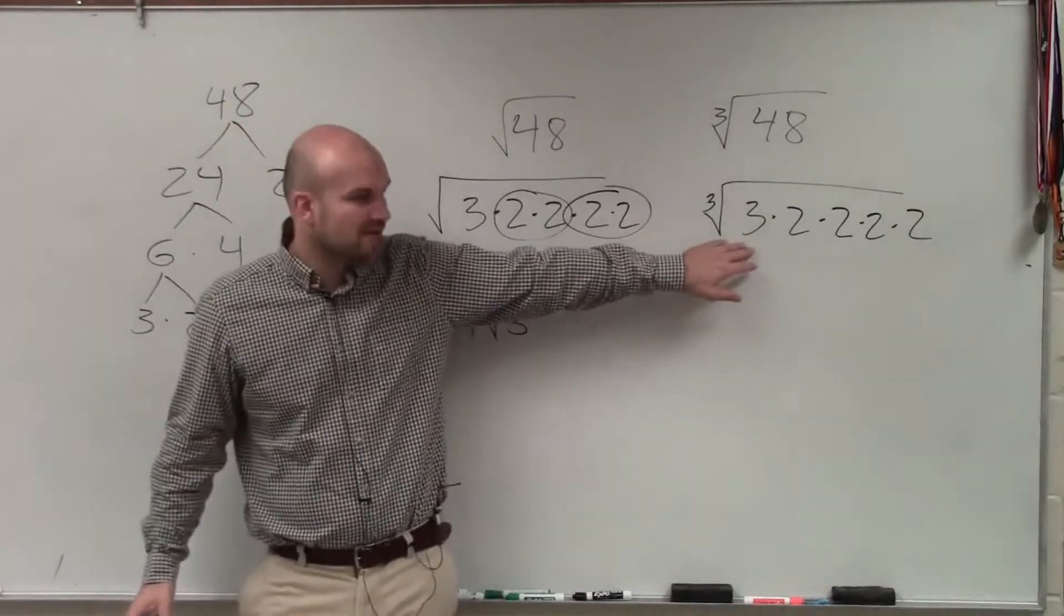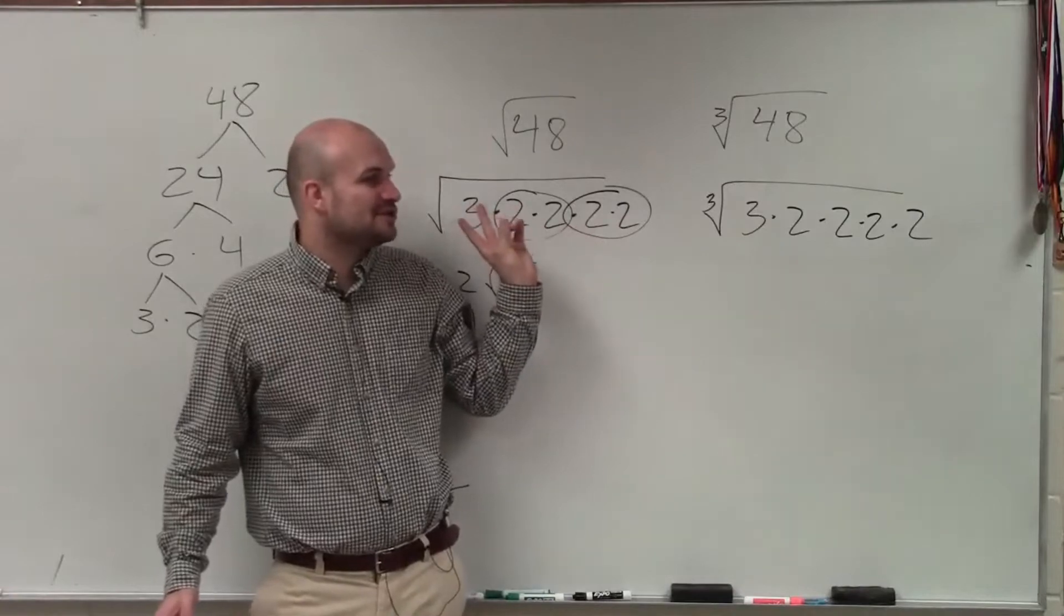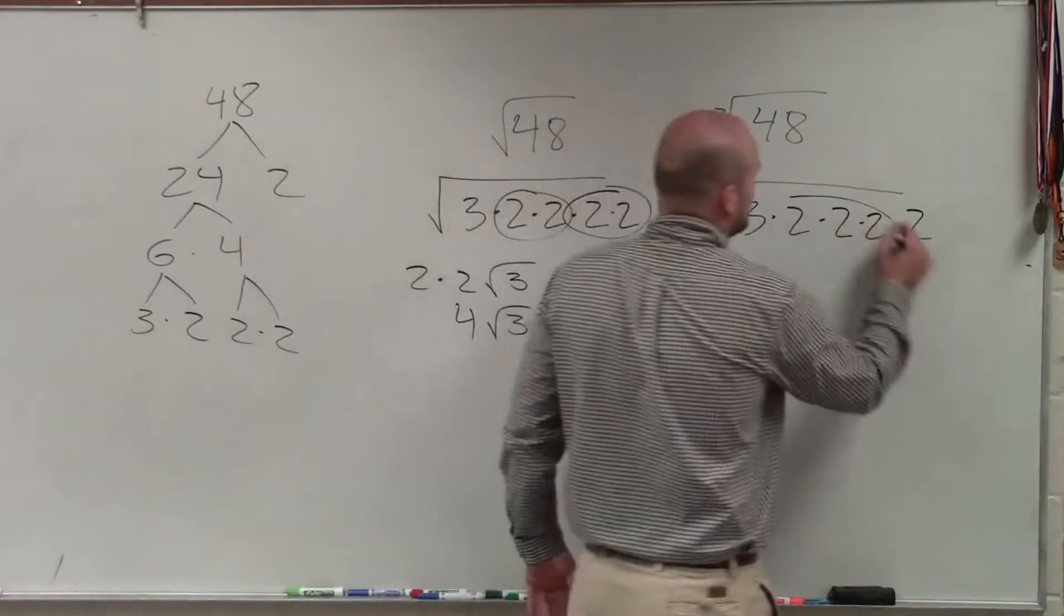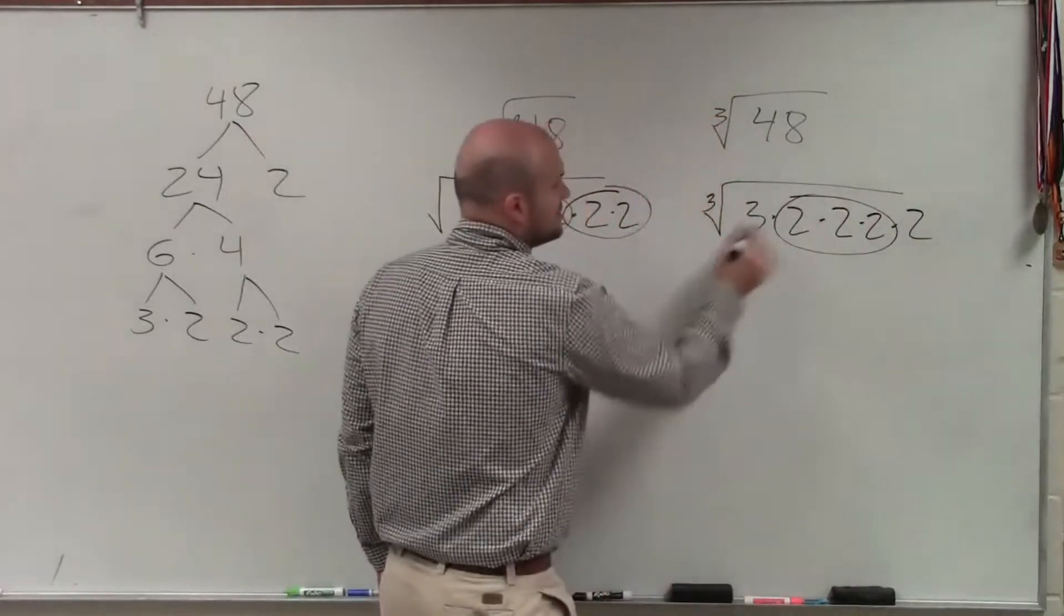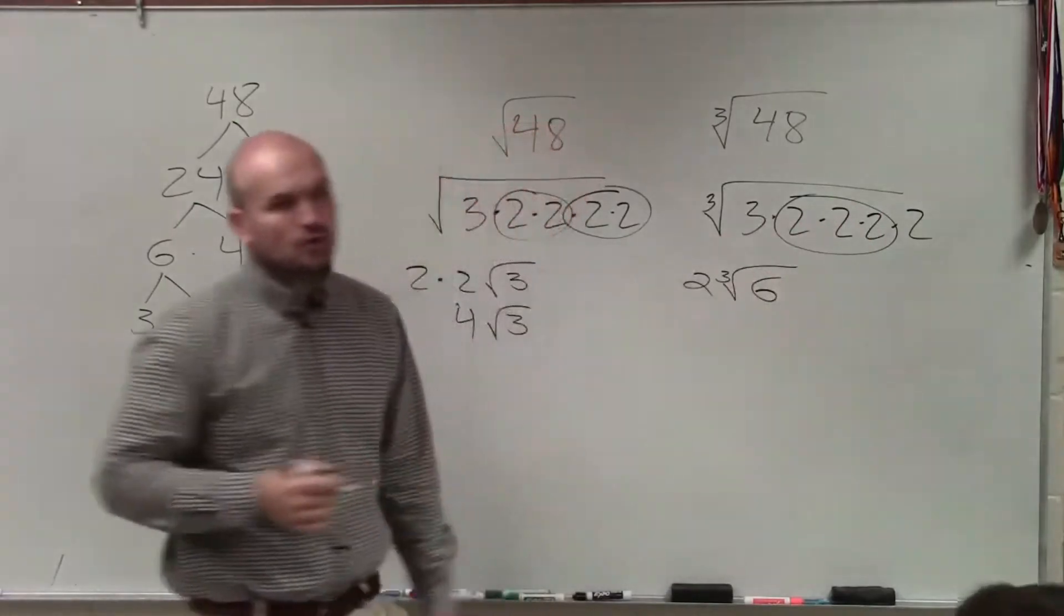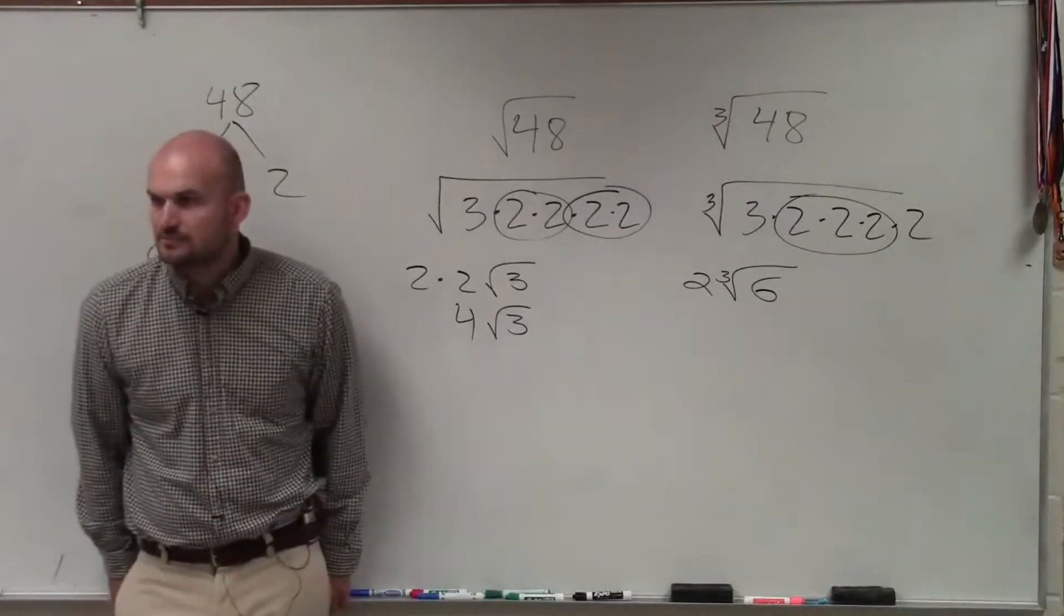However, for the cube root, Harvey, let's take a random guess. If for the square root I'd take out pairs of 2's, for the cube root I'd want to take out groups of 3. So therefore, that's going to be 2 times the cube root of 3 times 2, which is left over, which would be 6. Does that make sense?